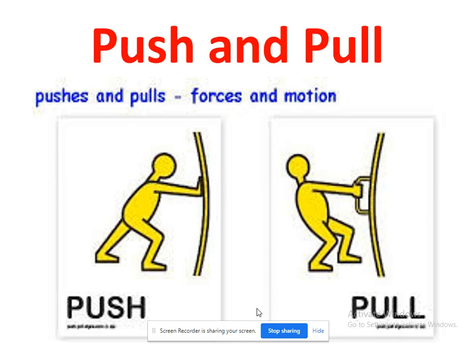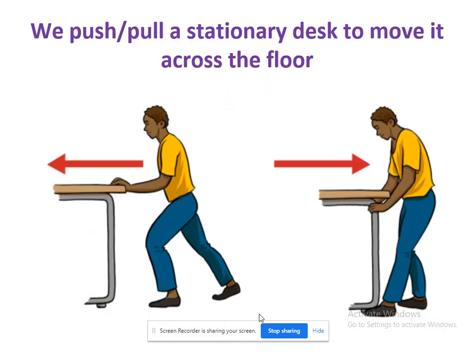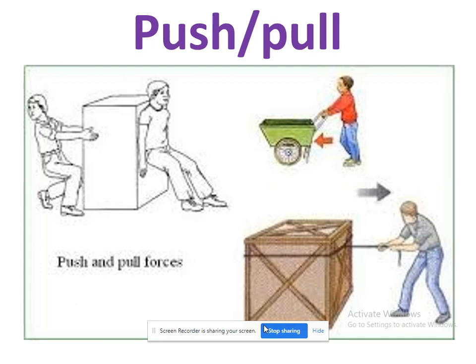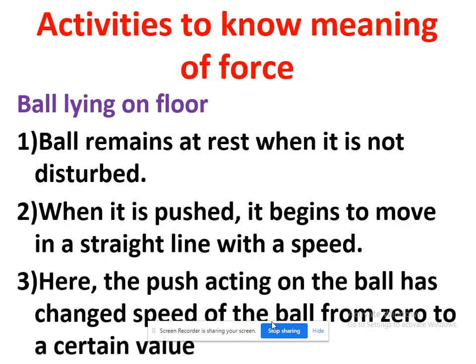Here you can see the difference between push and pull. A person is applying force and moving a table along the floor — in the same direction you apply the force, the object will move. In the next example, a box is being pushed by one person and pulled by another. Whichever force is greater in a particular direction, the object will move in that direction. These are different examples showing what changes occur when force acts on a body.